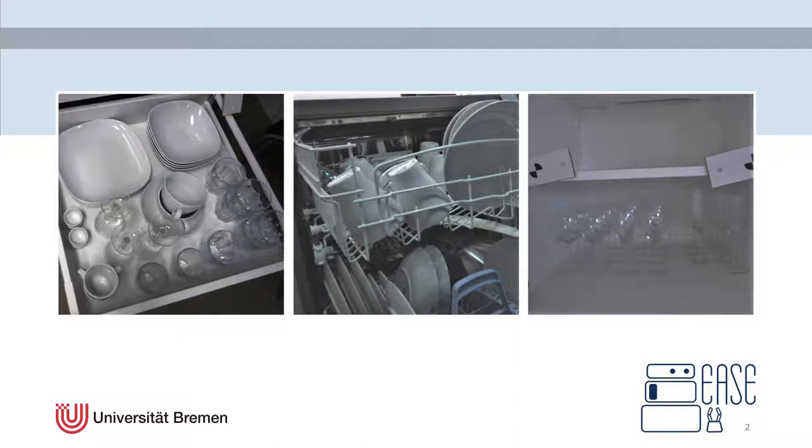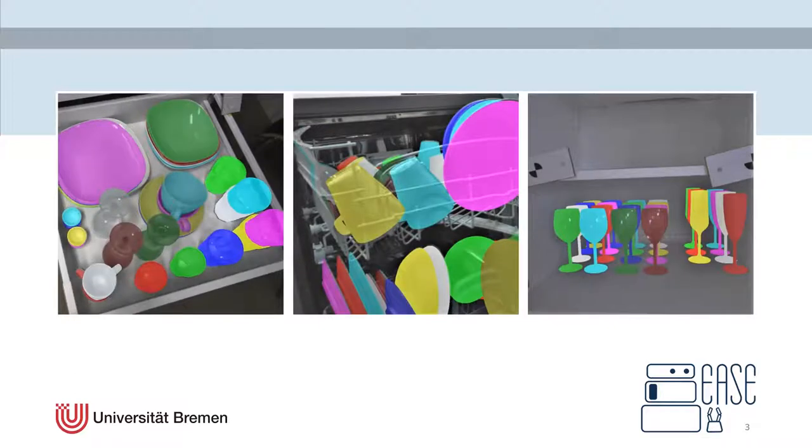So the images they are shown here are actually directly out of our dataset. For each object inside the scene, we provide a 6D pose. For these example images, we can see the rendered pose here as an overlay.